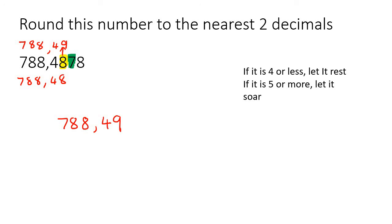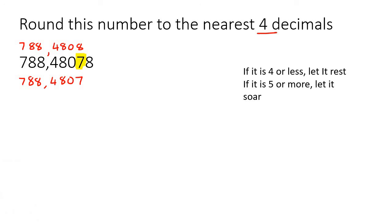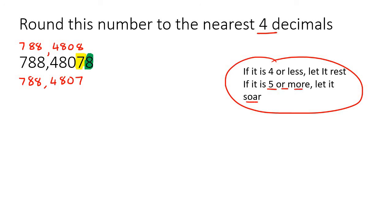Let's do one more example. This one says to the nearest four decimals. You count four decimals: 1, 2, 3, 4 — so it's that 7. Your possible answers could be 788,4808 or 788,4807, removing trailing zeros. The way we tell whether it goes up or down is we look at the number on the right. It says if it is 5 or more, let it soar. Because it's an 8, it causes this 7 to soar and become an 8. The final answer is 788,4808.